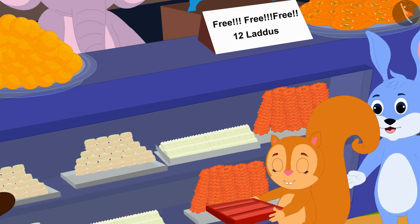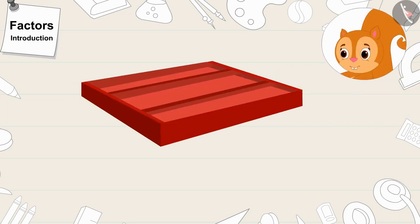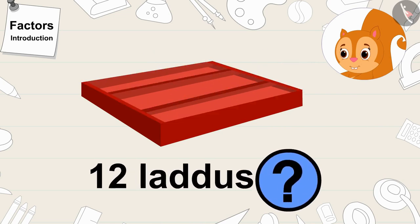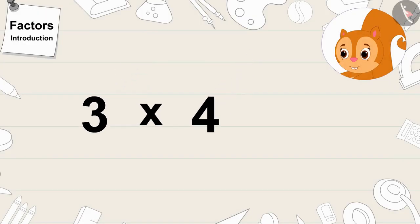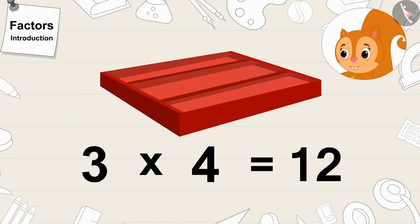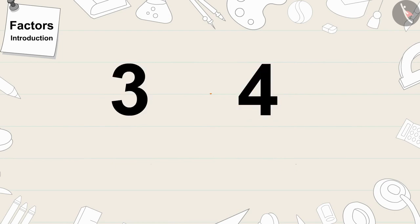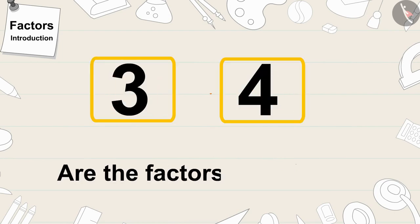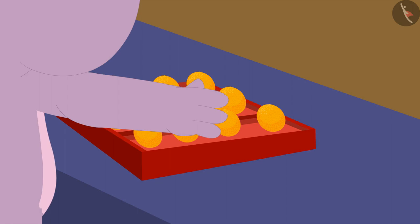Let's see who's next in the queue. Chanda is next in the queue. Chanda's box has 1 vertical line and 3 slots. Will 12 laddus fit in Chanda's box too? 3 times 4 is 12. Therefore, 12 laddus will also easily fit in Chanda's box. Or we can also say that the numbers 3 and 4 are factors of 12.